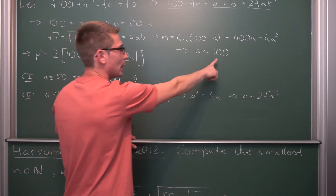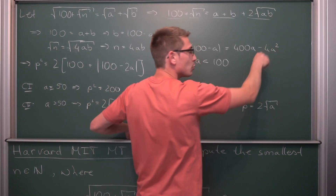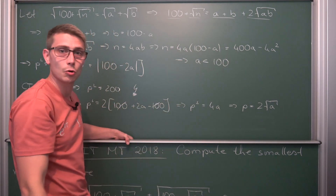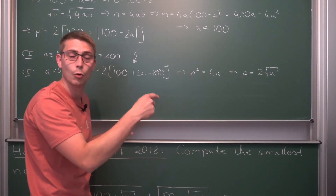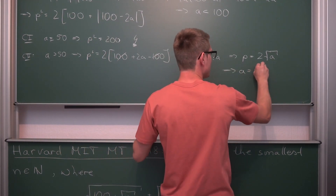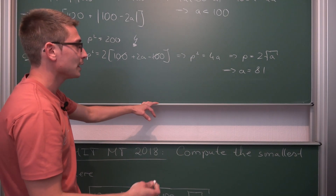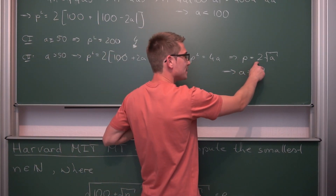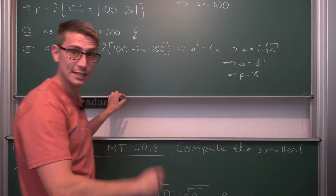The next perfect square less than 100 is 81 (= 9²). At a = 81, the 4a² term overtakes 400a, so n is minimized. This is the largest valid a giving us the smallest n. Therefore a = 81, and p = 2 × 9 = 18.